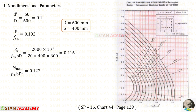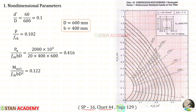Now let us find the non-dimensional parameters in the major axis. For D' / D we will get 0.1. Let us open SP 16, chart number 44 on page number 129. I have selected chart number 44 because our FY is 415. D' / D is 0.1 and in the question it is given that the reinforcement is distributed equally on four sides, so we have to select this chart.